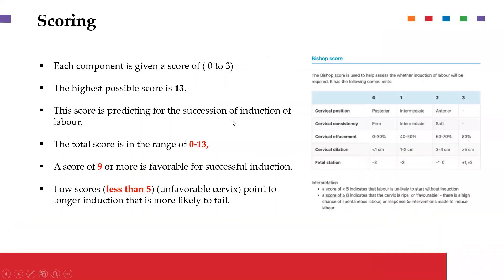The total score range is between 0 and 13, where each component can get a minimum of 0 and a maximum of 3. If the aggregate score is 9 or above, then the success of the induction is likely to be favourable, and the midwife or obstetrician is encouraged to induce labor. However, if the score is less than 5, the chances of a successful induction are low, and a failed induction is highly likely, so there is no need to attempt it. That is the use of the Bishop score.